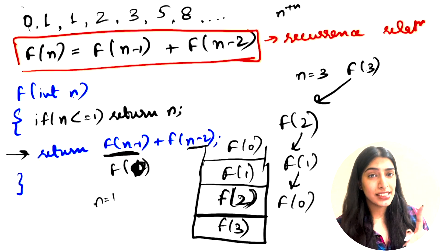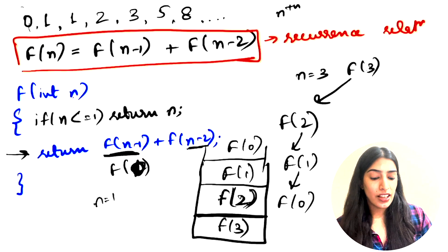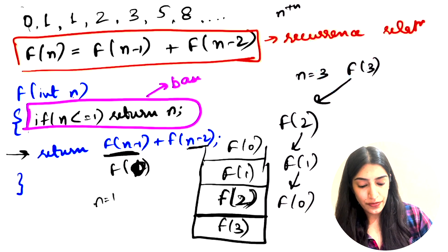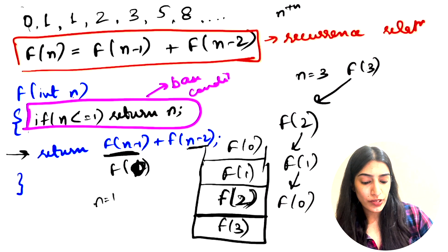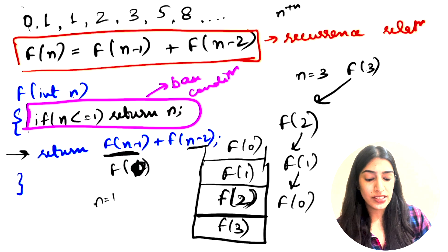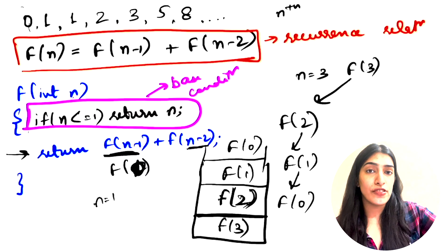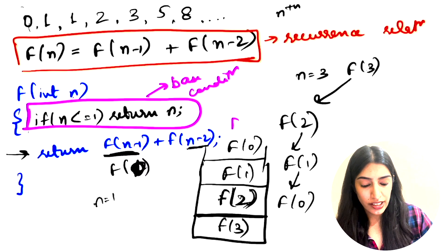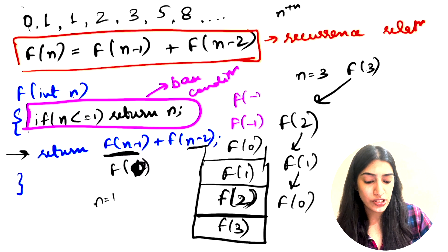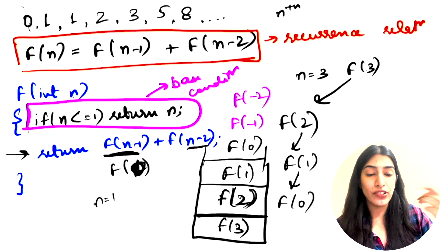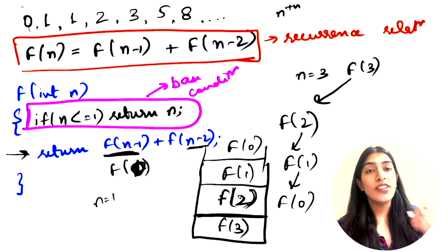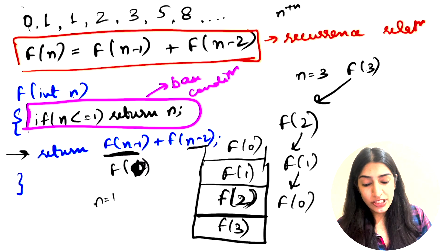This base condition is extremely important. If I did not write this condition, a stack overflow would have happened, because after F(0) we would have called F(-1), F(-2), F(-3), and there would be no stopping. Memory would keep getting allocated for F(-1), F(-2), and so on until we ran out of stack memory — a stack overflow. We actually ran the code in the last video and saw how stack overflow happens.